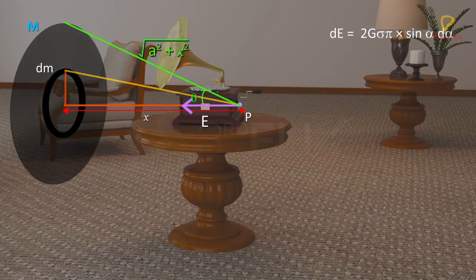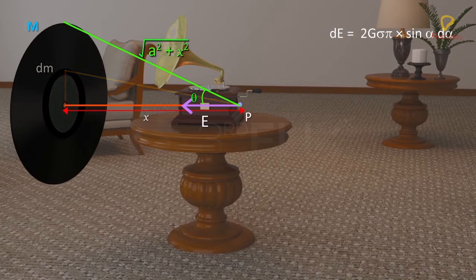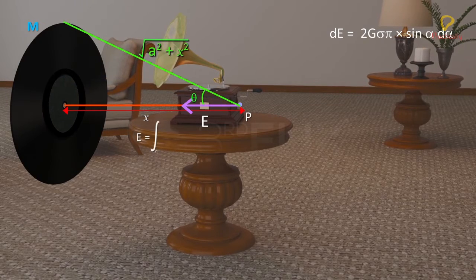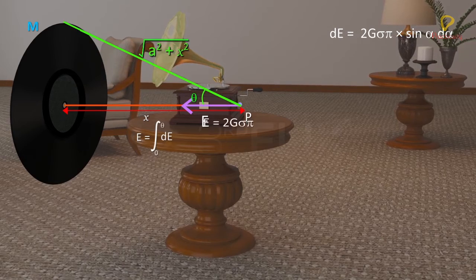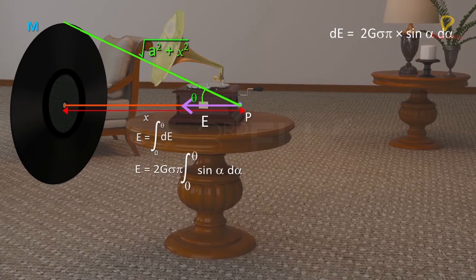The gravitational field due to all such ring elements will add up. The magnitude of gravitational field due to the complete disc is given by the integral of dE from 0 to theta. E equals 2G sigma π integral of sin alpha d alpha from 0 to theta.